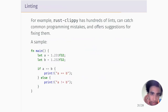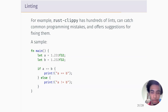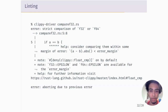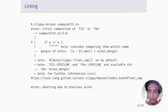Here's an example of how Clippy works: we have some Rust code comparing two floating point values for equality, which is a problem. We run Clippy on it, and first it tells us the error. Then it gives us a suggestion for an alternative — we have to subtract the two things, get the absolute value compared to the error margin. Then it says you can use these constants for the error margin. And if you want more information, you can go to a link. Something like that would be very useful for Vala developers.